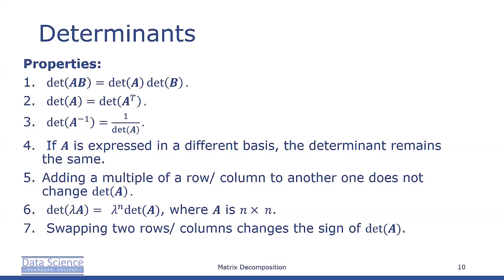For n×n matrices, we have the following properties: The determinant of a matrix product equals the product of the determinants, so det(AB) = det(A)det(B). Determinants are invariant to transposition, meaning det(A) = det(A^T).